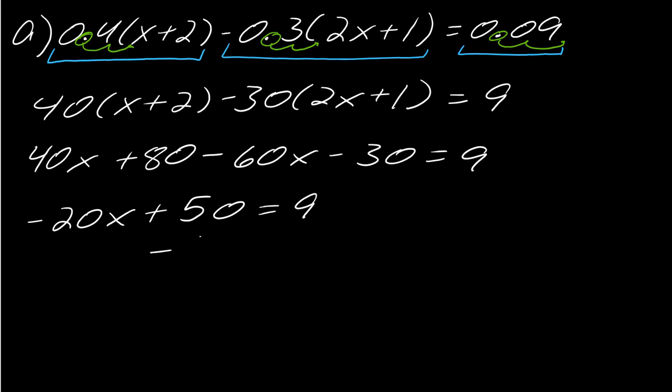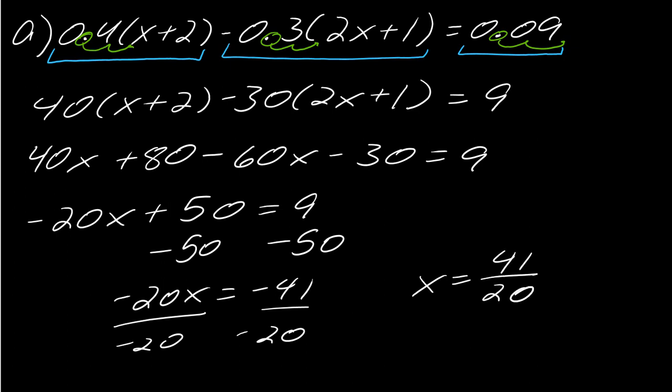And then I can subtract off the 50, so I get negative 20x equals negative 41. And then this one will just kind of be a fractional answer, which is fine. So this is going to be ultimately 41 over 20, and I can't actually reduce it any further. But that's the idea behind this.